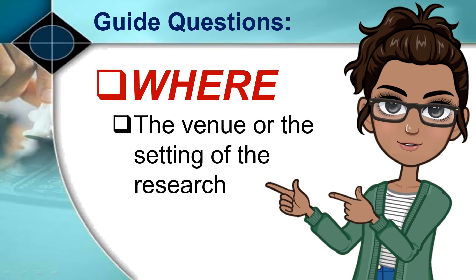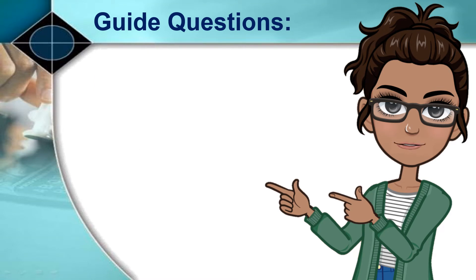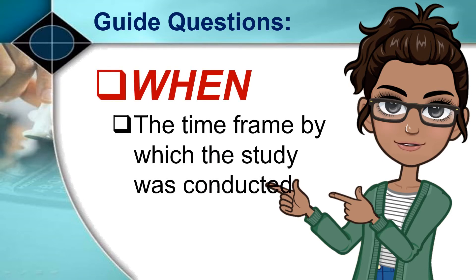Two: Where? The venue or setting of the research. Three: When? The timeframe by which the study was conducted.